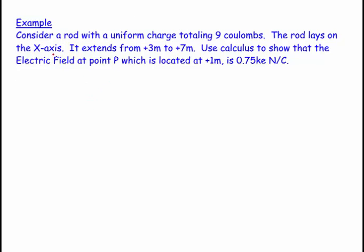Welcome. This question says consider a rod of uniform charge totaling 9 coulombs. The rod lays on the x-axis. It extends from plus 3 to plus 7 meters. Use calculus to show the electric field at point P, located at plus 1 meter on the x-axis is 0.75ke newtons per coulomb.